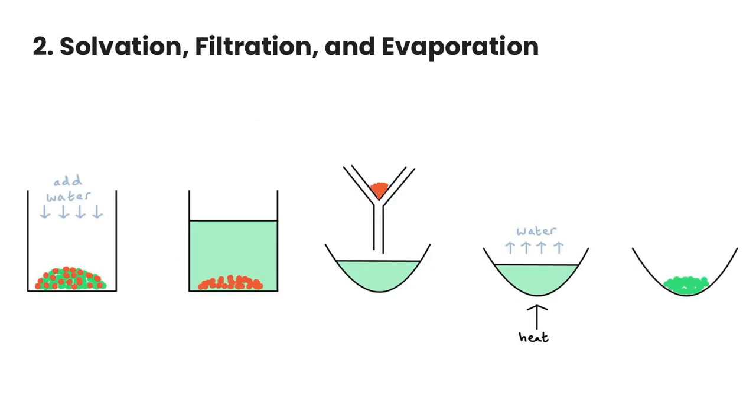The second method of solvation, filtration, and evaporation is used to separate two solids based on intermolecular forces. If for example, we have a sample, say we have sand and sugar in here, we can separate that because one of the components is going to be soluble in water or some other solvent, and the other one's going to be insoluble in water.